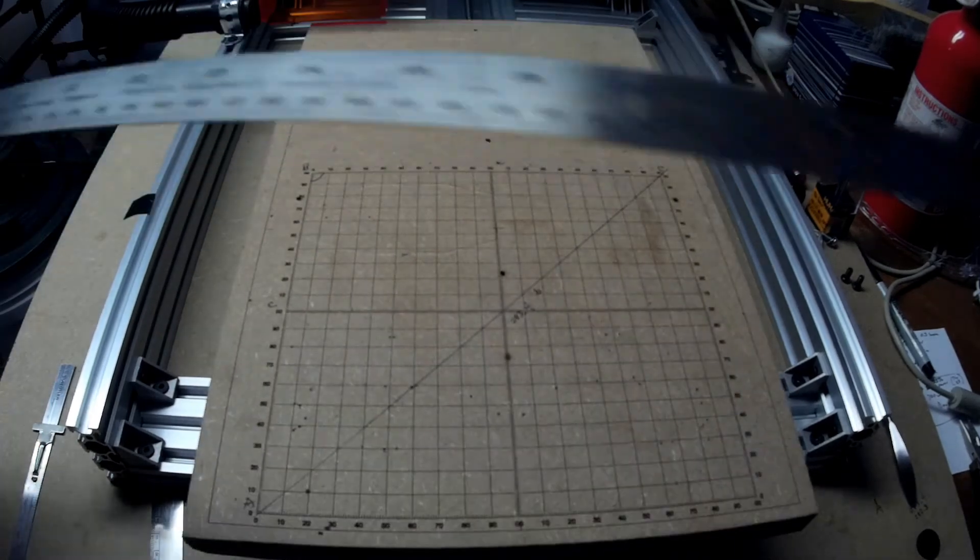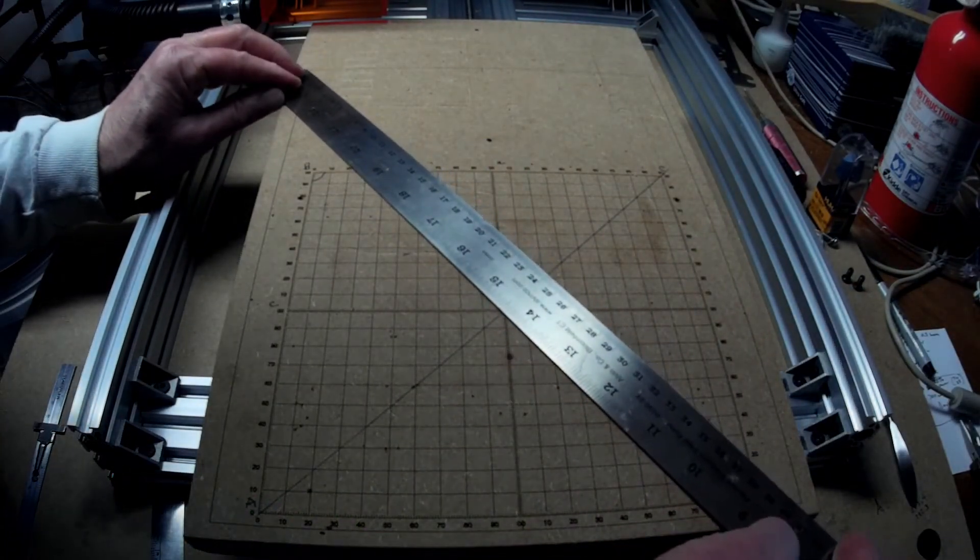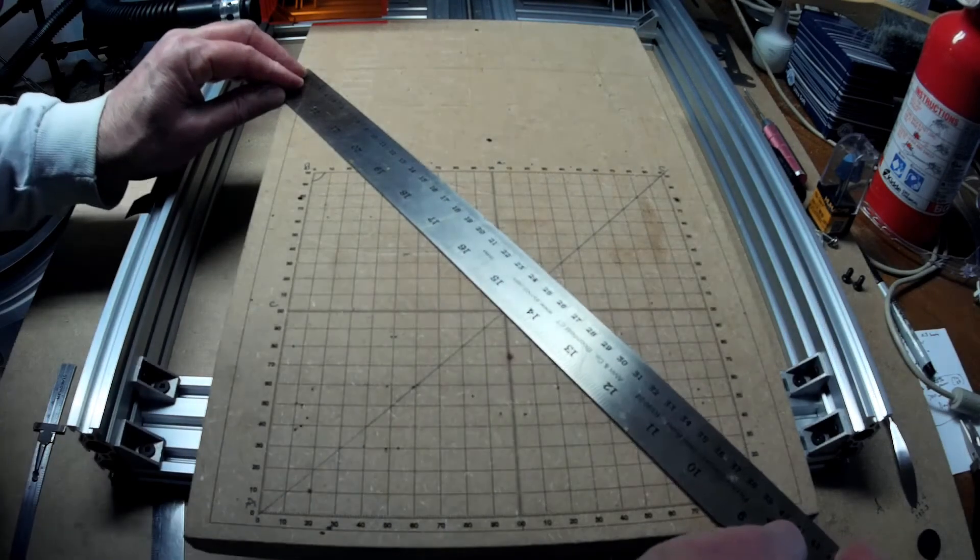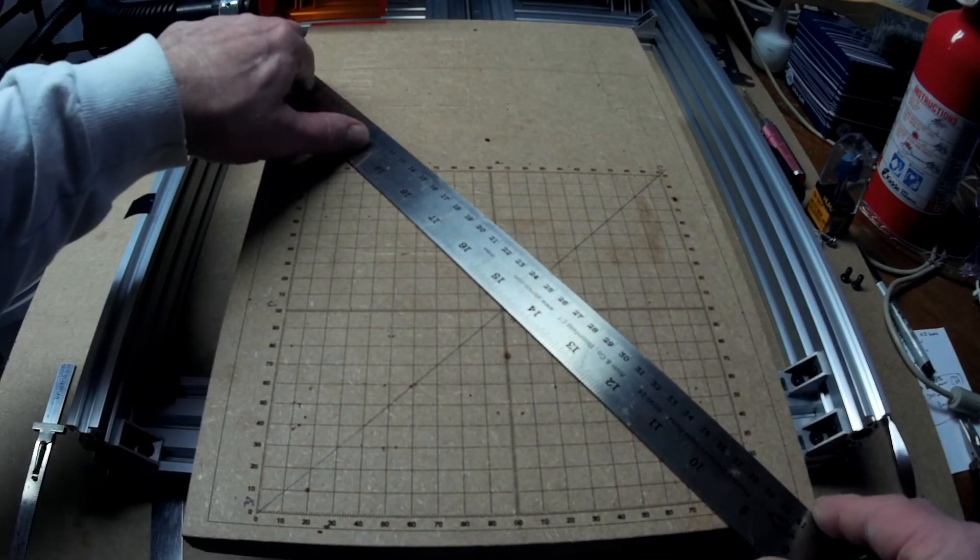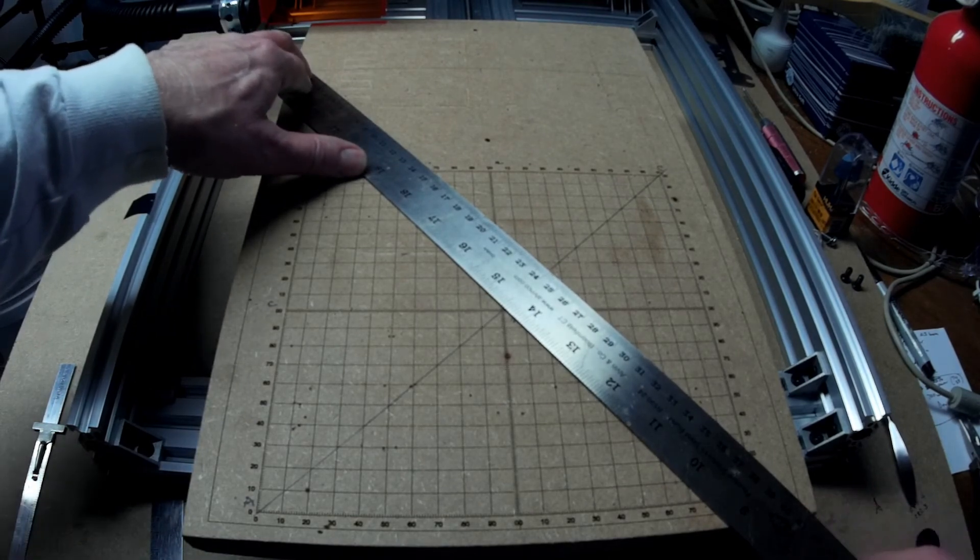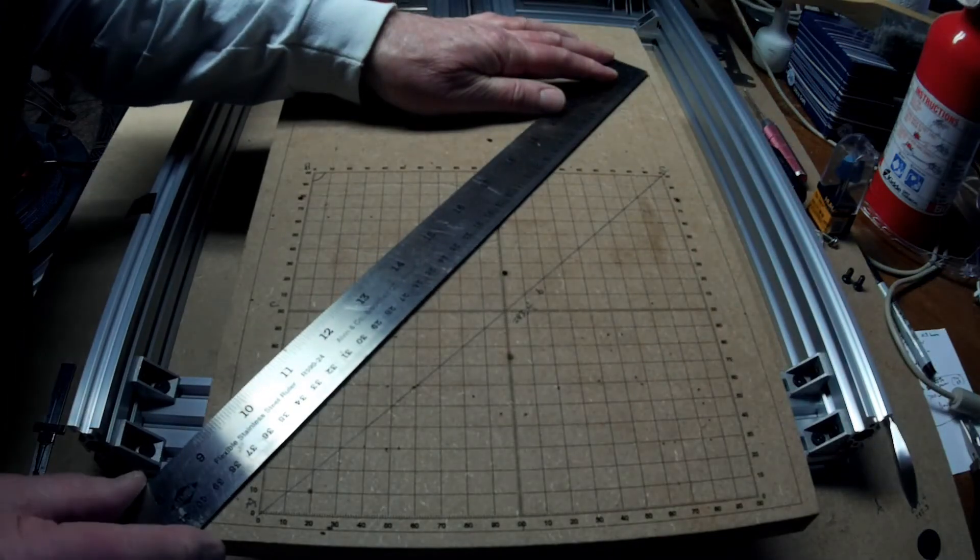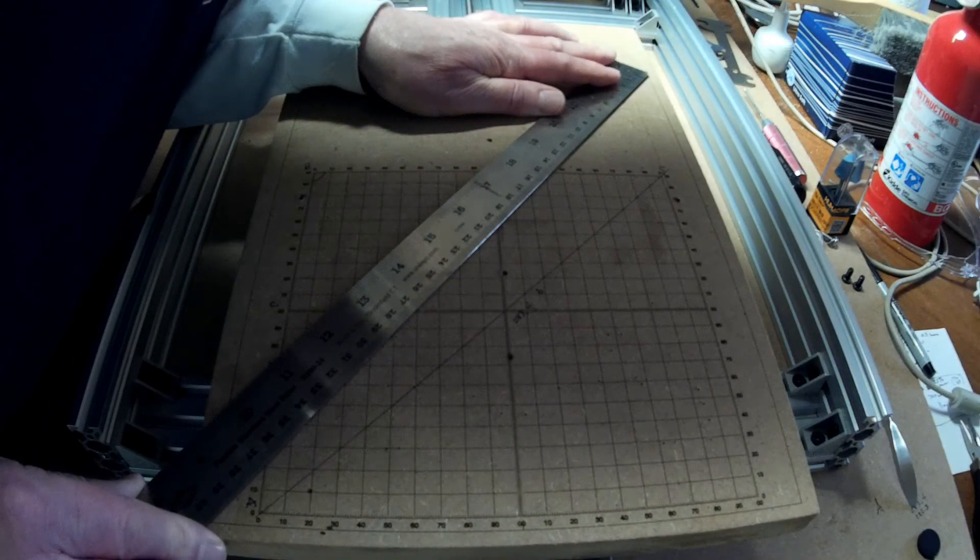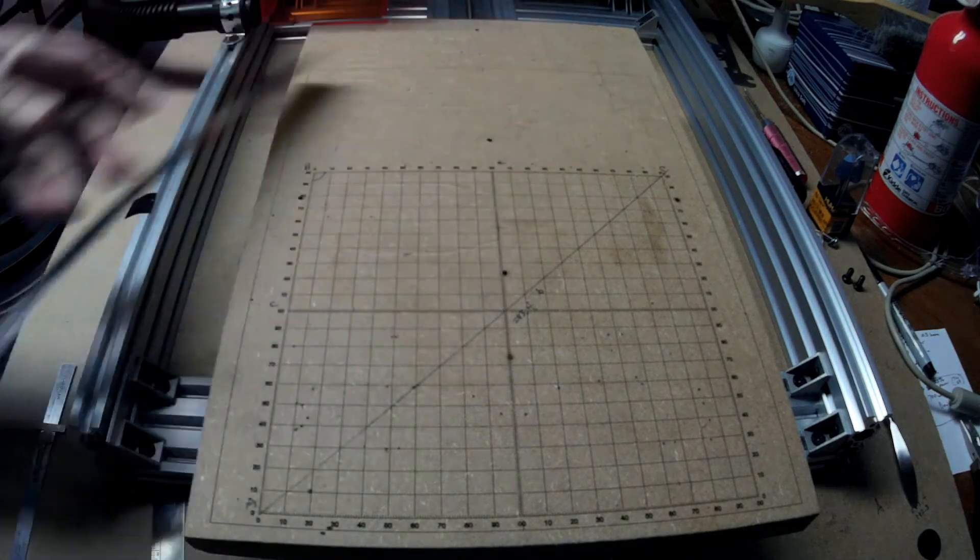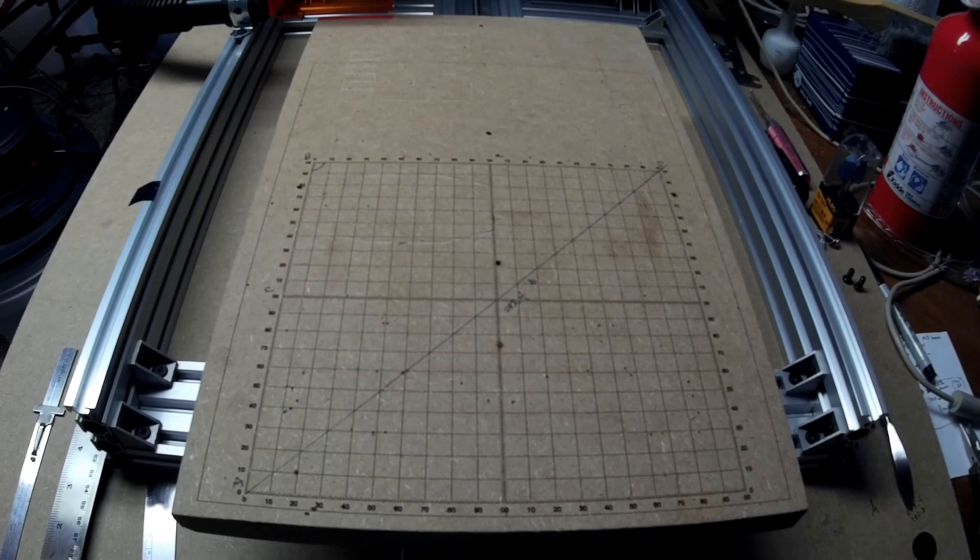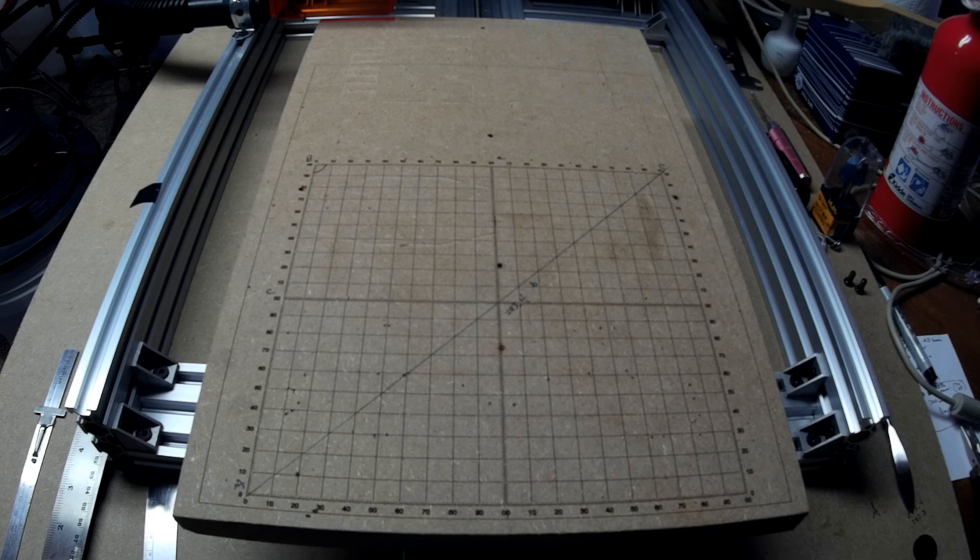If all is well, these should be 400 millimeters from corner to corner and regardless if it's square, they should be equal. That's right at 400. 400, that's as close as I'm going to be able to get it. So, I'm ready to resurface that spoil board and start my projects. Thanks for watching.